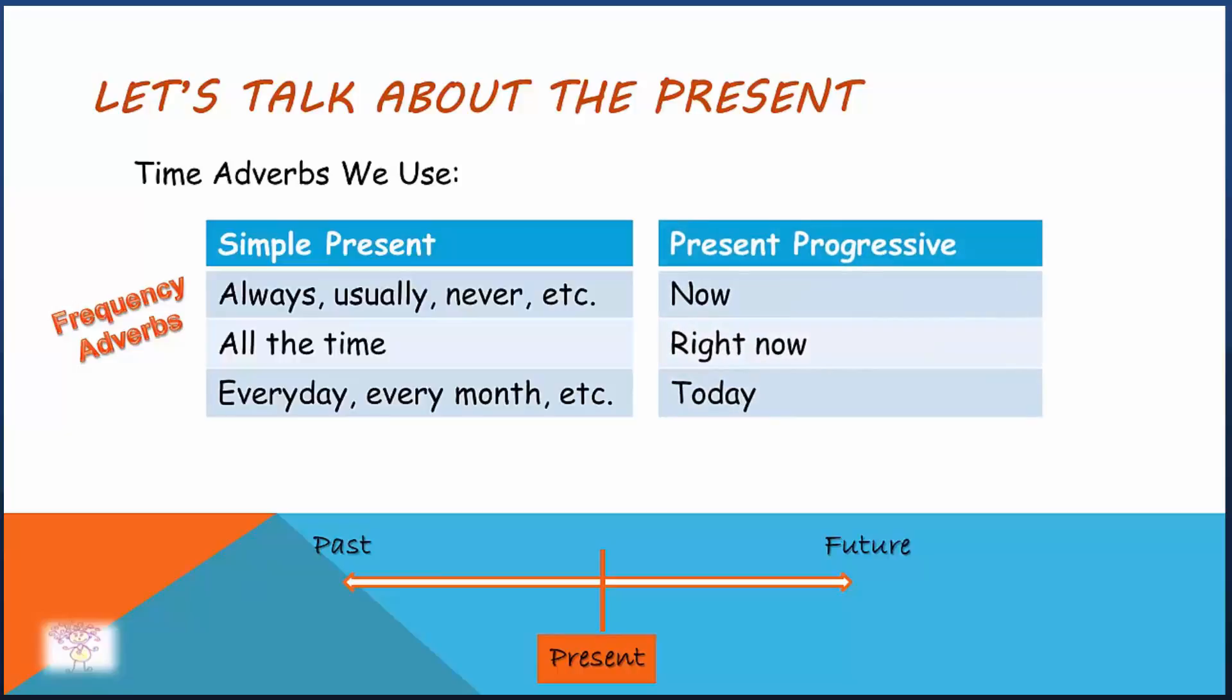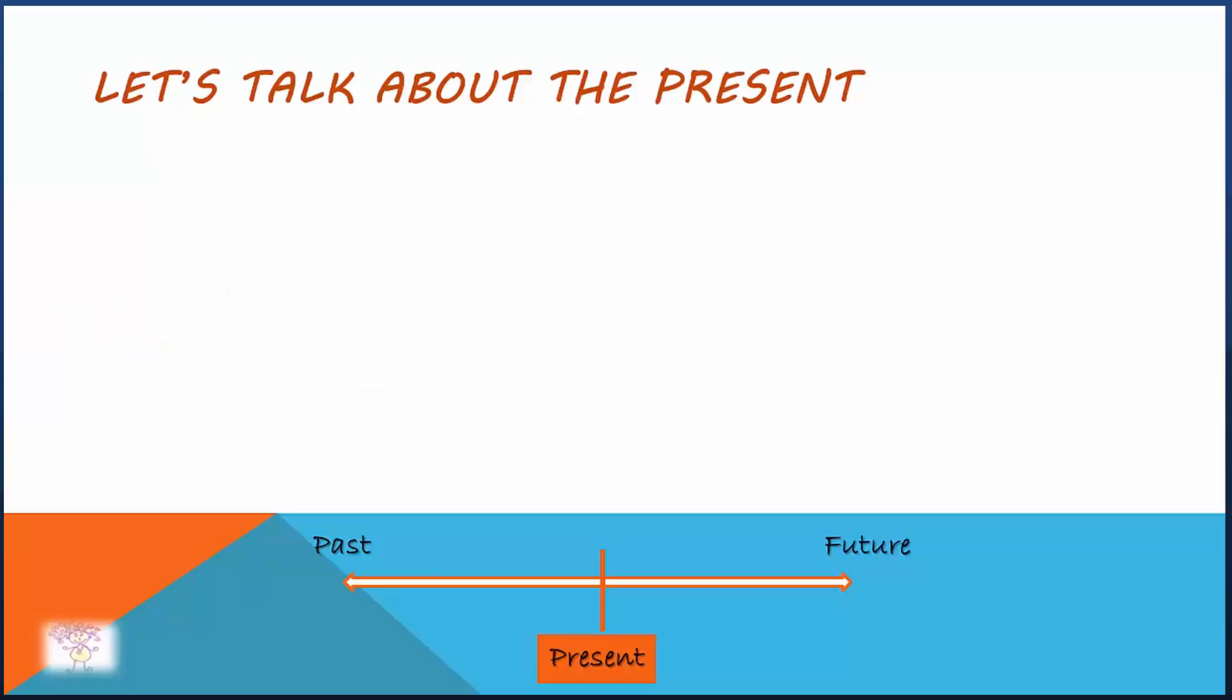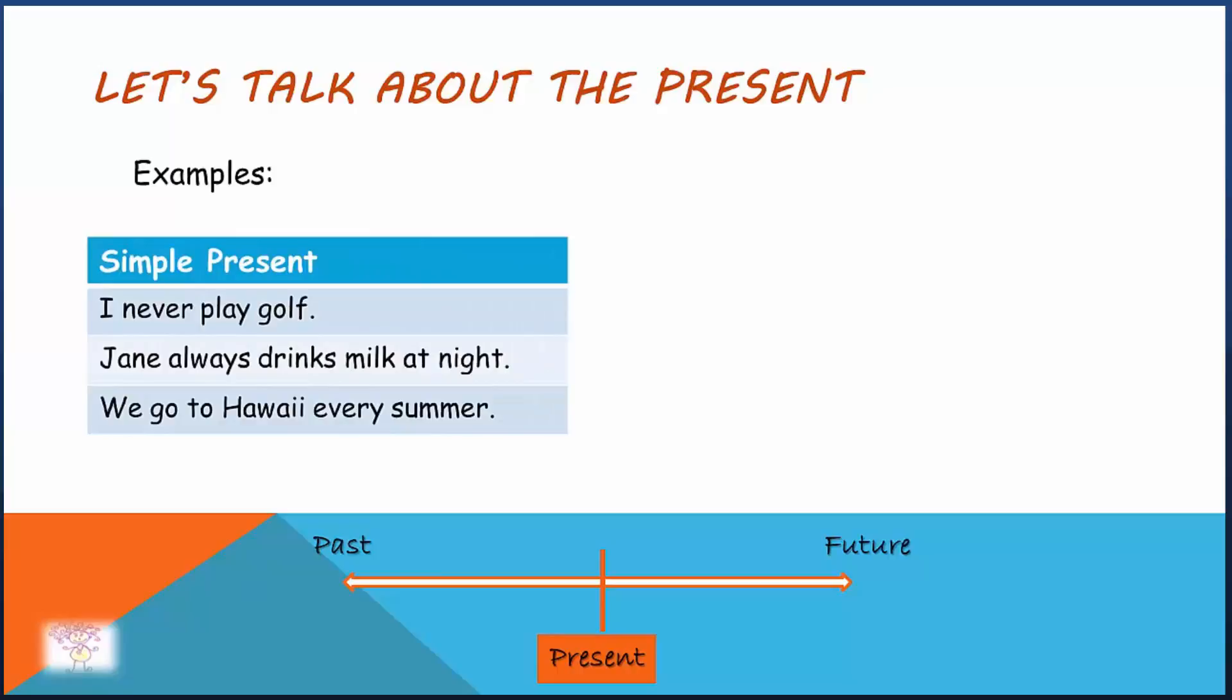We use now, right now, and today in present progressive. Here are some examples in the simple present tense: I never play golf. Jane always drinks milk at night. We go to Hawaii every summer.